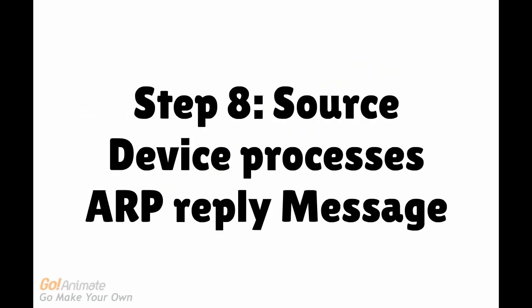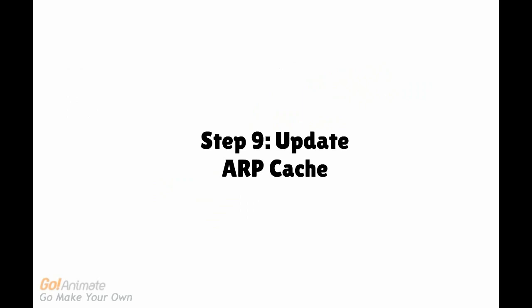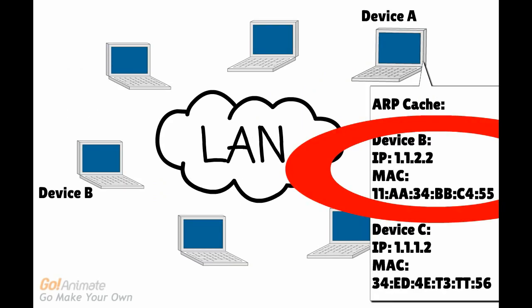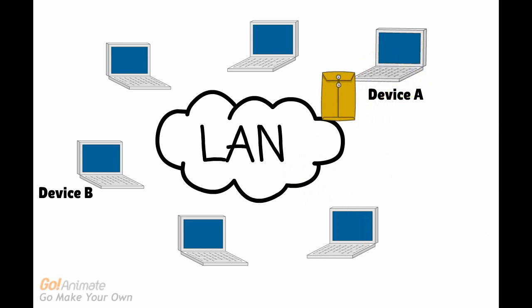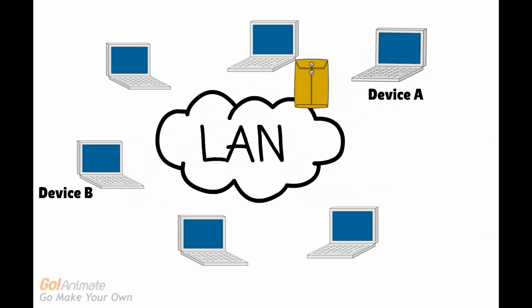In step 8, the source device, device A, will process this ARP reply message. Finally, in step 9, device A will update its ARP cache and include the MAC address of the destination device, device B. Both devices now have the appropriate addresses to send messages over a local area network.